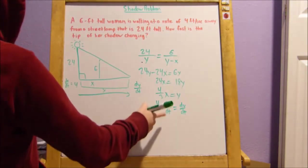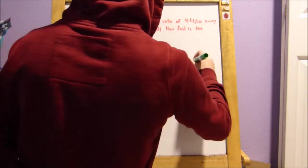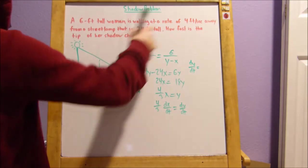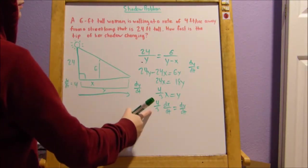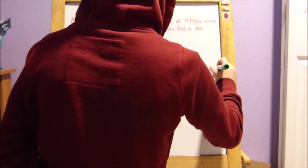Now, we can just plug in what our dx over dt is. So, that's 4. So, our rate of the tip of the shadow changing is going to be 4 times 4 over 3, which is just 16 over 3 feet per second.